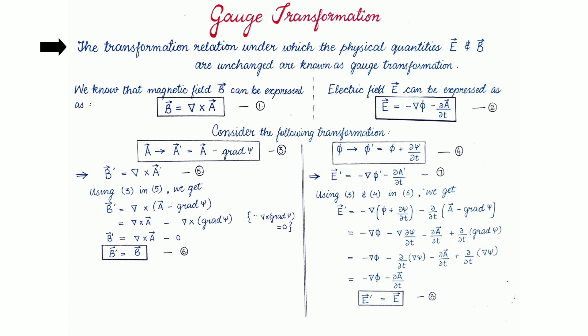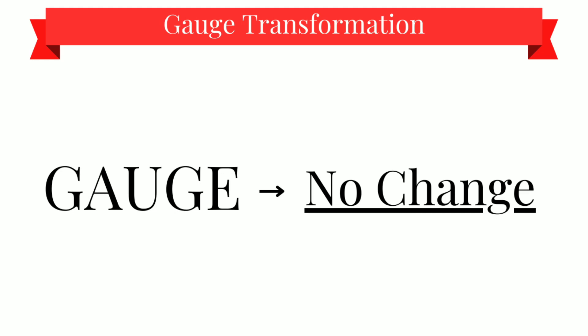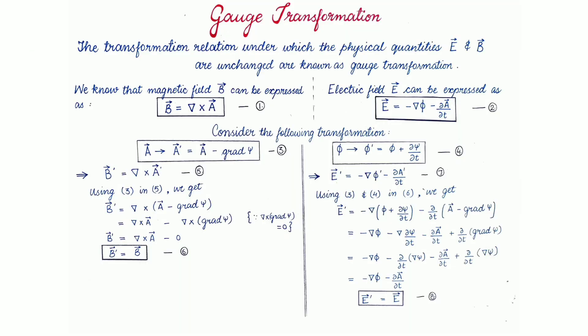Basically, the transformation relation under which the physical quantities E and B are unchanged are known as gauge transformation. The first thing that should come in your mind from gauge transformation is that the physical quantities are unchanged under this transformation.